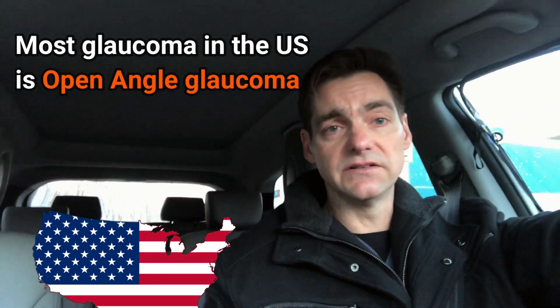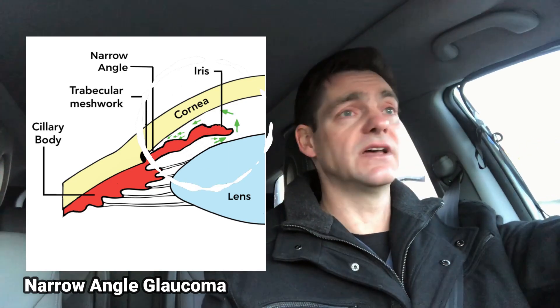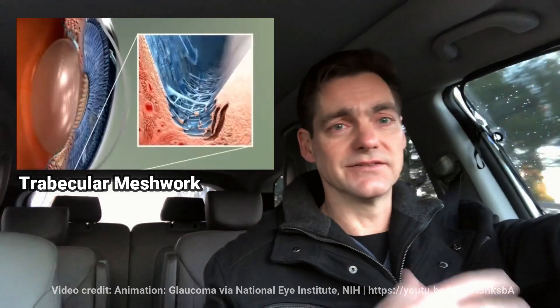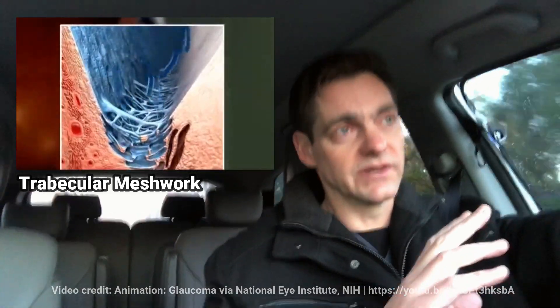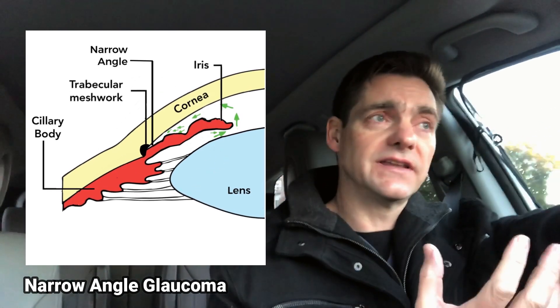Narrow-angle glaucoma is when the angle — which is the angle between the underside of the cornea and the top side of the iris — is narrow. The reason why narrow angles versus open angles is an important distinction is that the trabecular meshwork, that's the drainage grate in the eye, is where fluid drains out of the eye. If that space just on the side of the trabecular meshwork is narrow, it restricts flow.